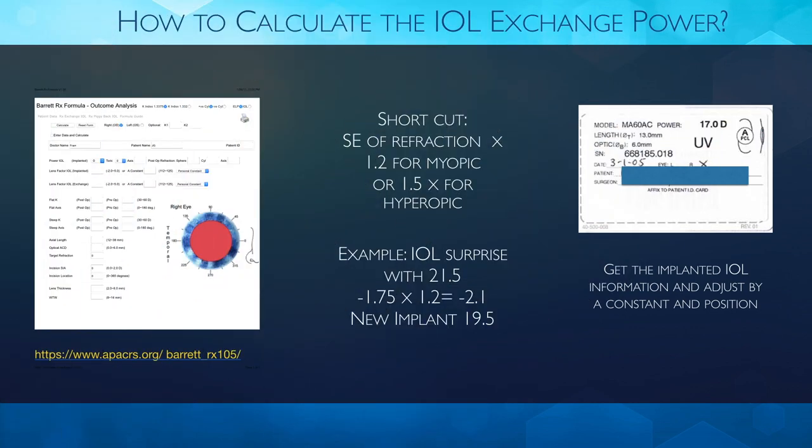Now that we have the tools to do our IOL exchange, we want to calculate the IOL exchange power. Graham Barrett has a wonderful formula for IOL exchange on his website, and you need to do biometry before and after to understand how to adjust the IOL power. A shortcut from Gills and Hoffer is to take the spherical equivalent of the refraction. If it was a myopic error, multiply it by 1.2, and if it was a hyperopic error, multiply it by 1.5.